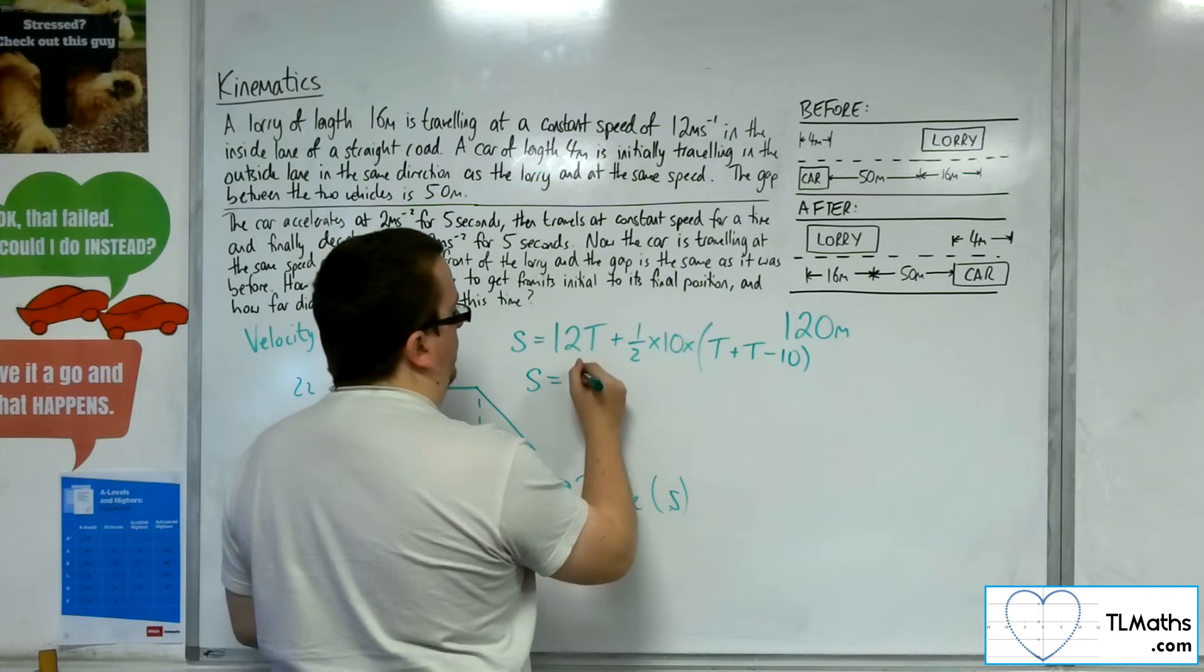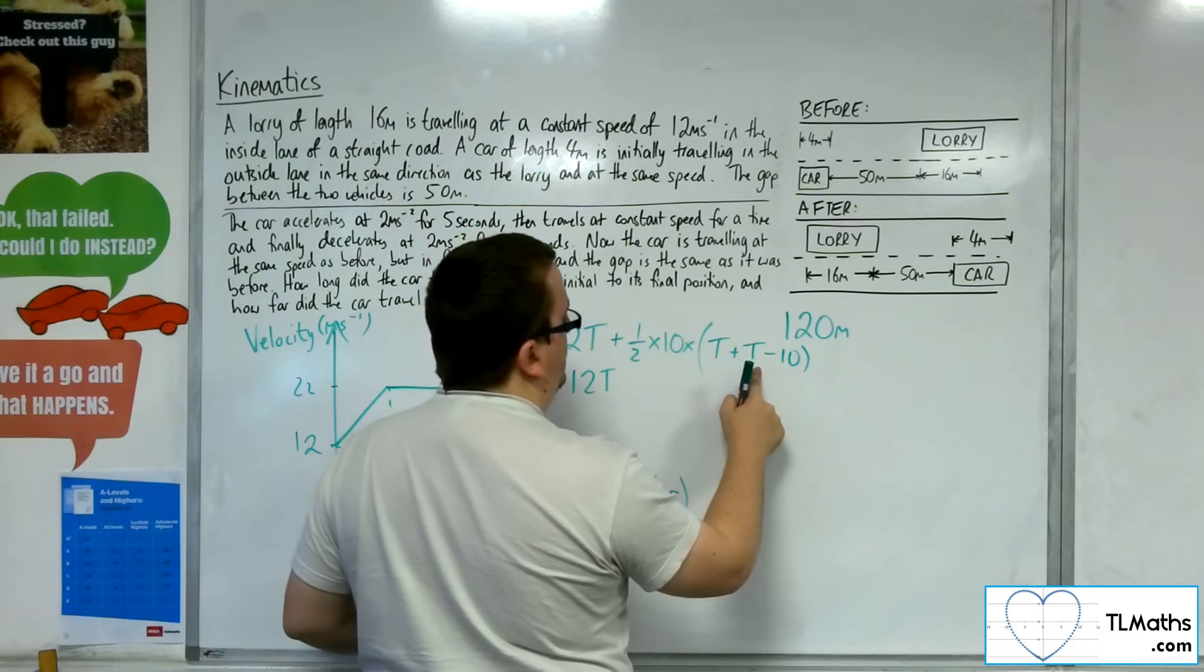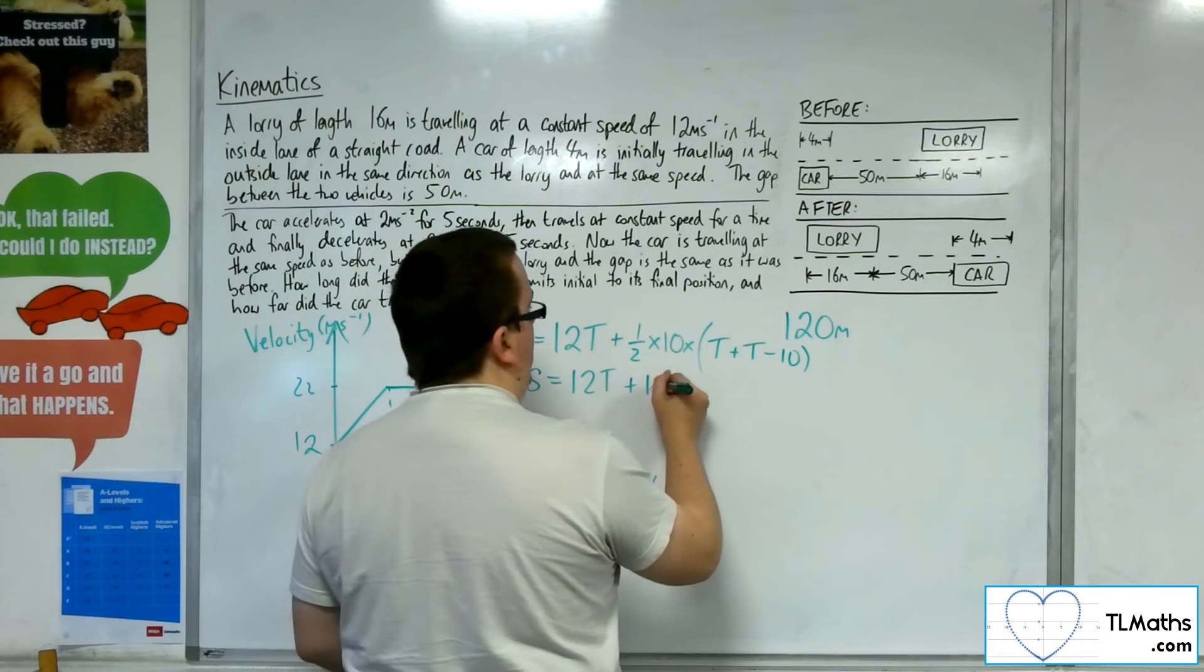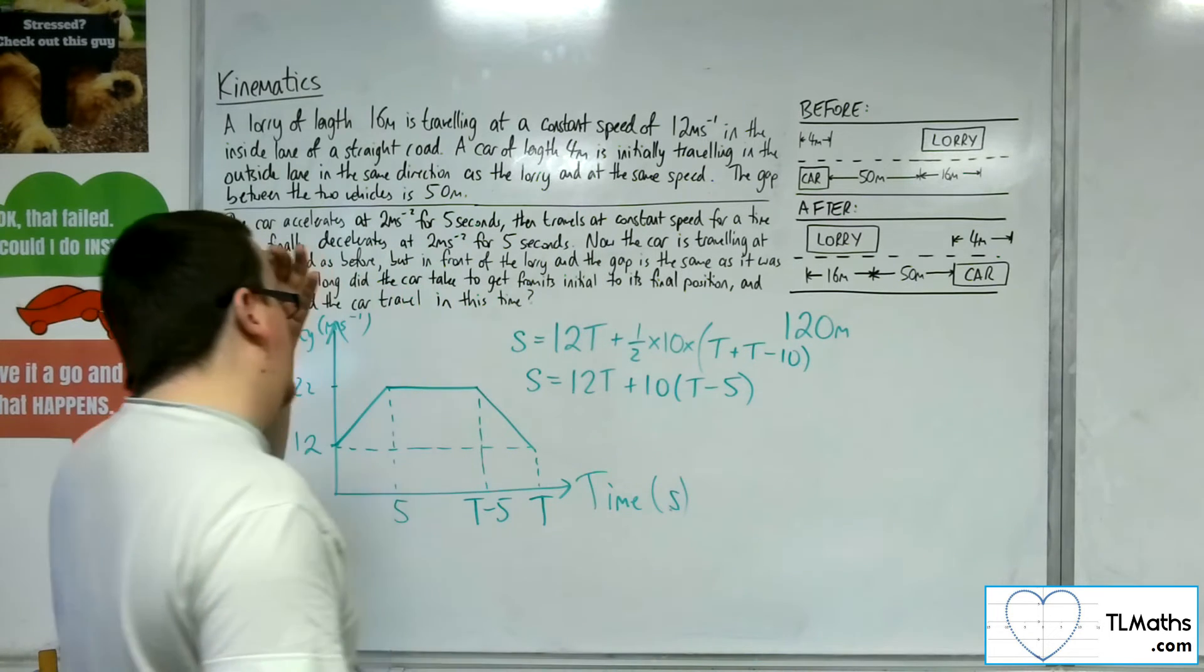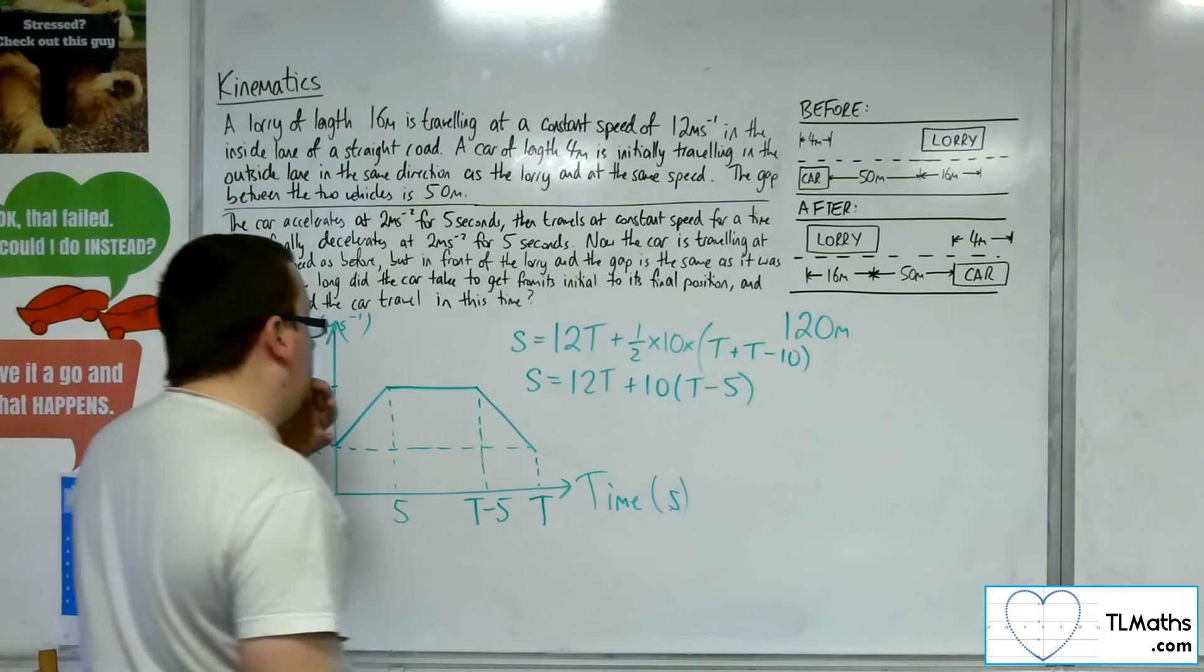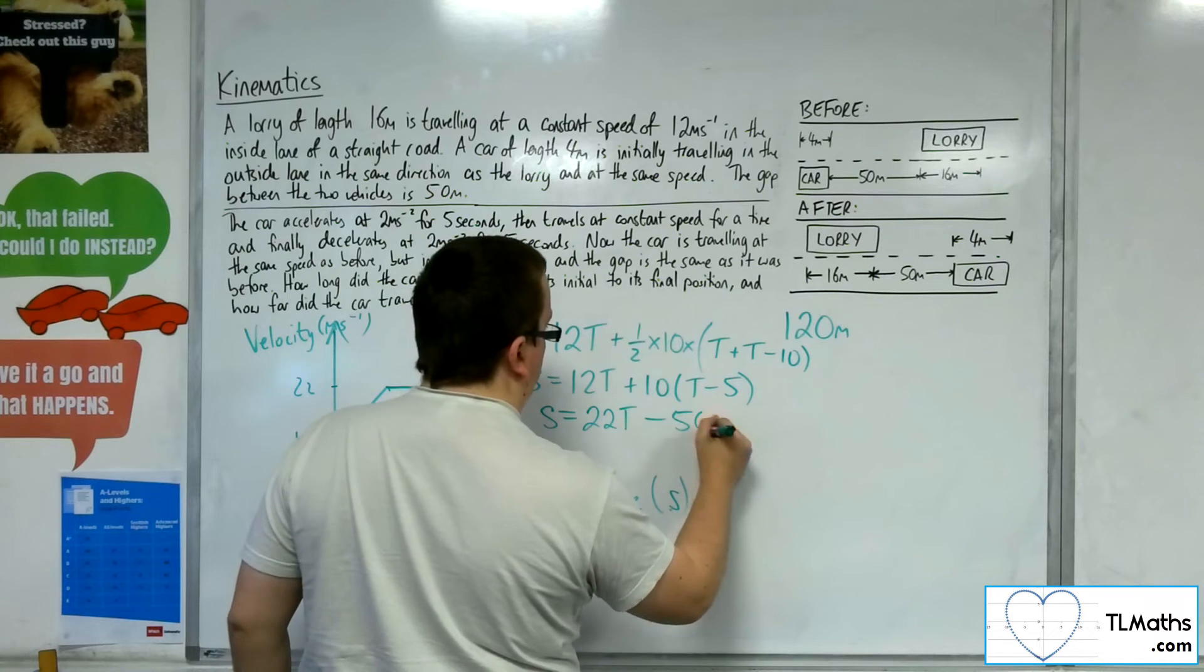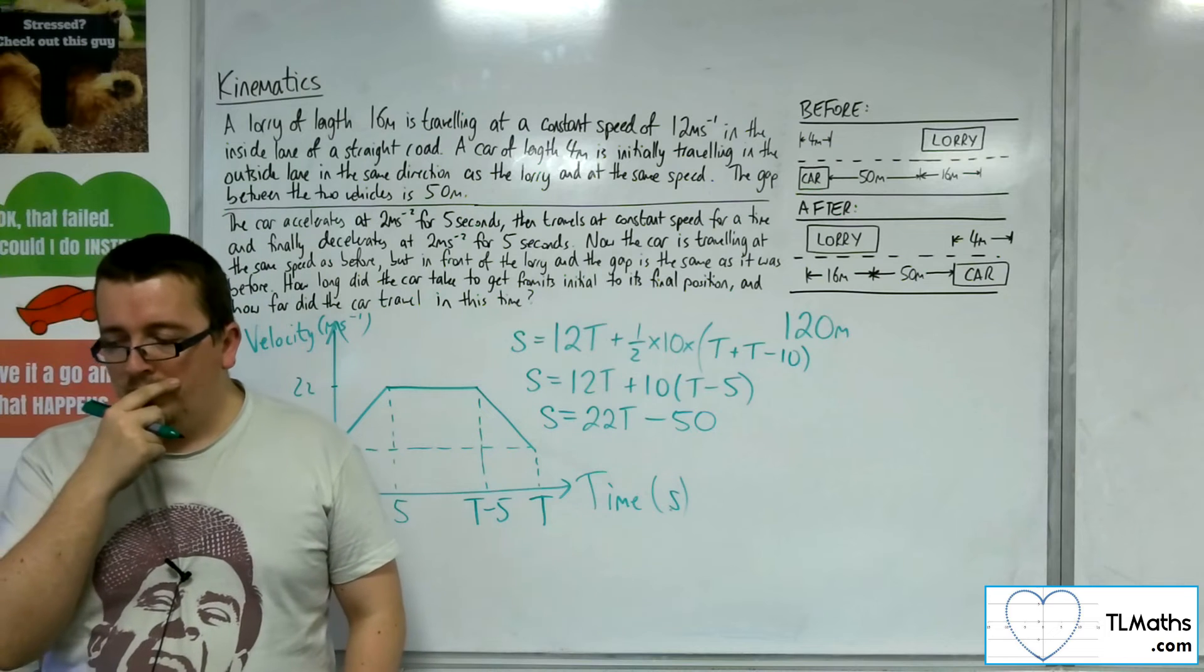This is the equation that I have. So S equals 12T plus half times 10. So 5 lots of 2T take away 10. The factor of 2 that's there knocks out that half. So I can write it as 10 lots of T take 5. Now I could multiply that out and simplify it as well. So S is 12T plus 10T, so 22T, and then take away 50. That is the current situation as it stands.